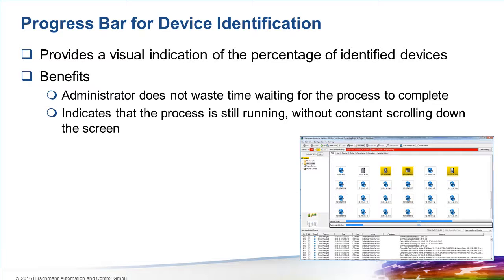Once the scan is completed, Industrial HiVision starts a second process where it tries to identify the make and model of each device. Most network devices will respond to SNMP, so Industrial HiVision downloads SNMP variables from each device in order to identify them. This is a time-consuming process, especially on large networks, and was purposefully designed to avoid overloading the network with data traffic.